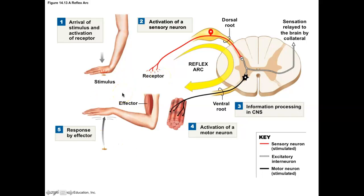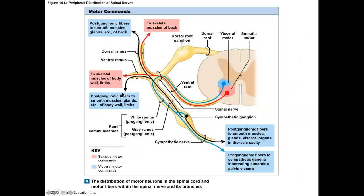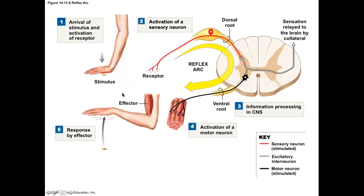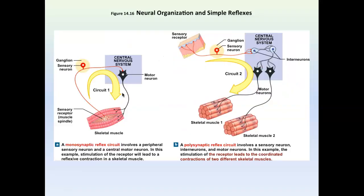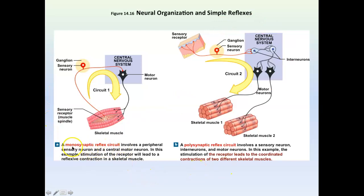There are two reflex arcs. Let's look at this picture. This is a monosynaptic reflex arc, and this is a polysynaptic reflex arc. Monosynaptic means one synapse. This is a very typical setup — there's a sensory receptor.